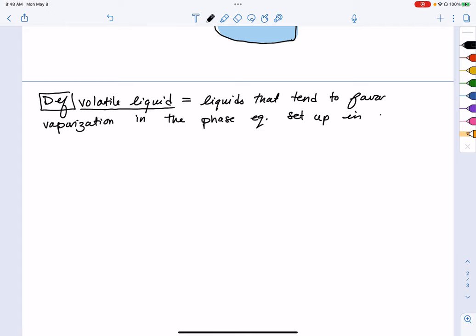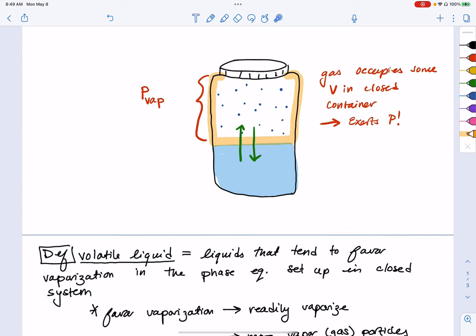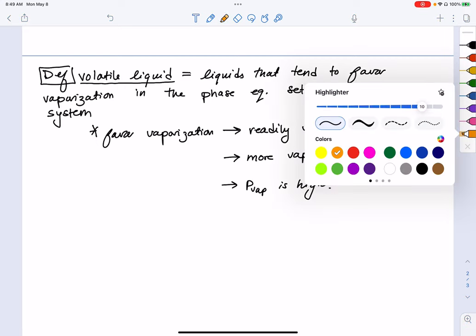So volatile liquids are liquids that tend to favor vaporization in the phase equilibrium set up in a more or less closed system. So if they favor vaporization, this means that they are more readily able to vaporize. And if we have more vapor particles or gas particles that are in the vapor phase in some space above a liquid, then we're going to have a higher pressure. So volatile liquids have high vapor pressures at room temperature.